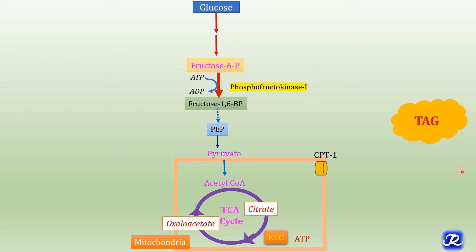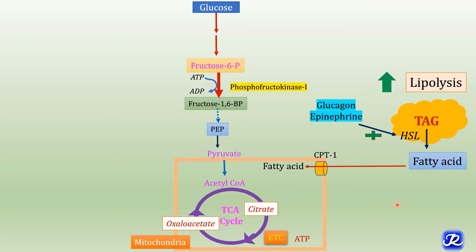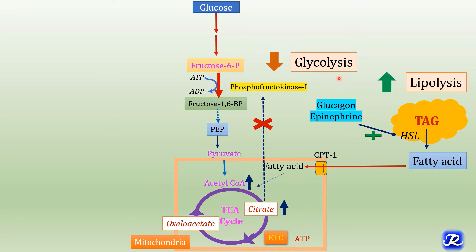In fasting and starvation, glucagon and epinephrine are the important hormones. They phosphorylate hormone-sensitive lipase, causing triacylglycerols to be broken down into glycerol and fatty acids, thereby increasing lipolysis. These fatty acids enter mitochondria and undergo beta oxidation, increasing acetyl-CoA levels. Acetyl-CoA enters the TCA cycle, increasing citrate concentration, and citrate is an allosteric inhibitor of phosphofructokinase 1, further decreasing glycolysis.